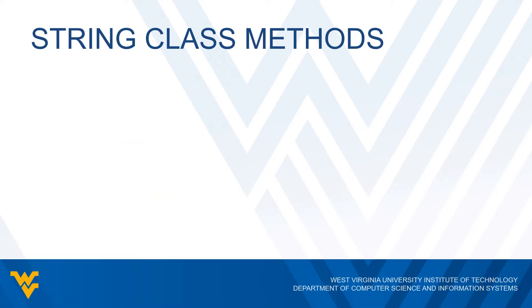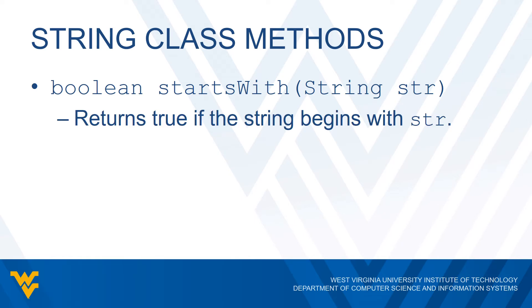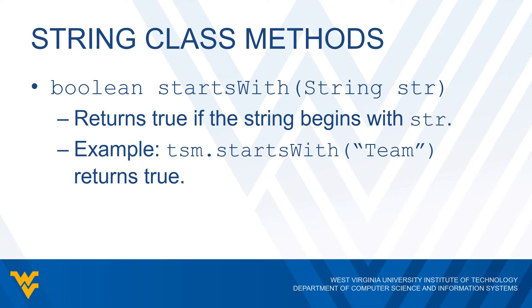The next method is actually a Boolean method called startsWith. What this does is check to see if our original string starts with the string we pass in. If whatever string we pass has the same initial characters as our string, this returns true; otherwise it returns false. So if we do TSM.startsWith('team'), this is going to return true because our string is 'team solo mid', and sure enough it does start with the substring 'team'.